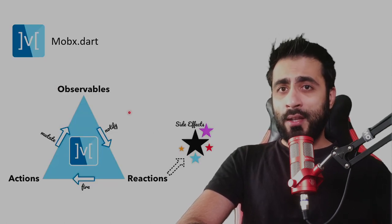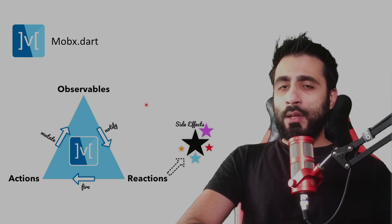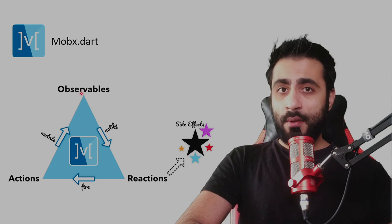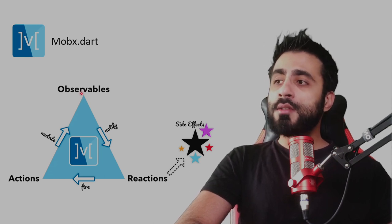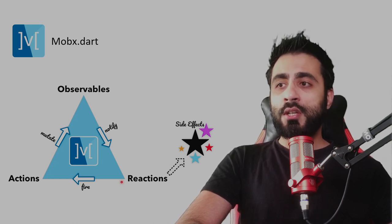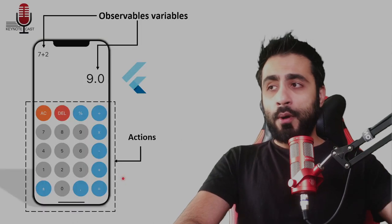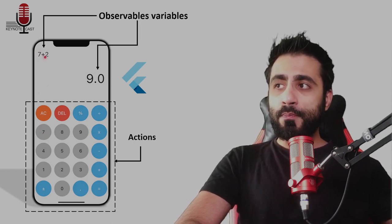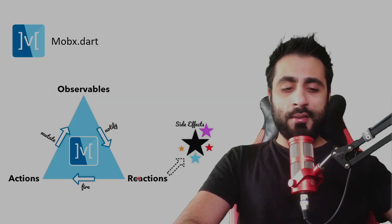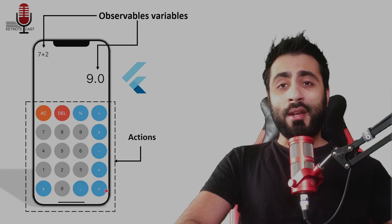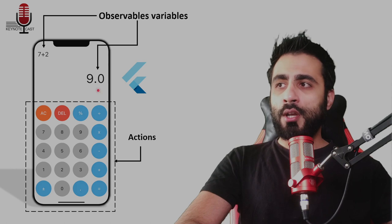We're going to use the mobx.dart dependency. To summarize how this state management works: you have a set of actions that will change observables — some variables, some states — and when the state changes it will notify whatever widget is listening to that change and will react to update the screen. For our case, the numbers will change the formula on top. If I select 7 plus 2, it will react and change the screen to display '7 + 2'. When I click equals, it will react to do the calculation and notify the widget displaying the result to update.